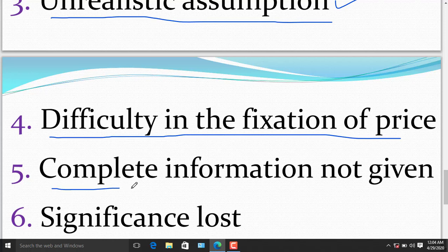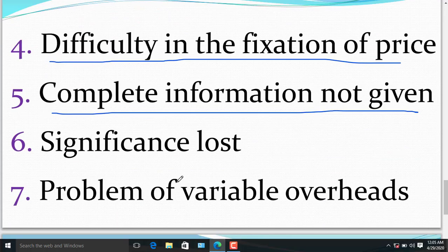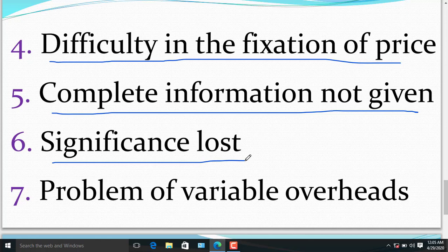The fifth limitation of marginal costing is complete information not given. It does not explain the reasons for increase in production or sales. The sixth limitation of marginal costing is significance lost. In capital intensive industries, fixed cost occupies major portion in the total cost, but marginal cost covers only variable cost. As such, it loses its significance in capital industries because in capital industries, the maximum portion is from fixed cost.